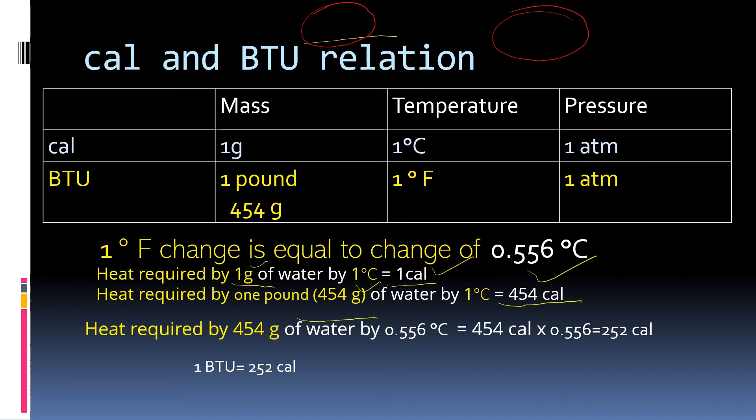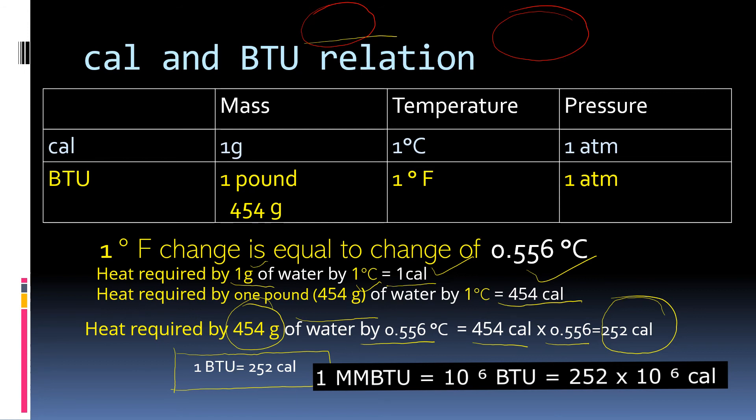If we want to heat 454 grams for 0.556 degree Celsius, we will multiply 454 by 0.556 which will give 252 calories. Therefore, 1 BTU is equal to 252 calories. Once we know 1 BTU, we can certainly have the sense of 1 million metric BTU which is 10 raised to power 6 BTU. So 1 million metric BTU will be equal to 252 into 10 raised to power 6 calories.